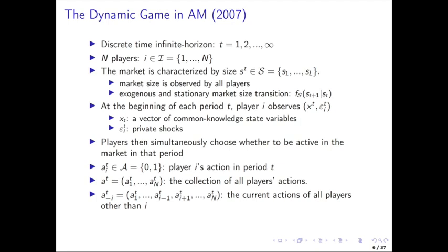Here's the notation for the dynamic game in Aguirregabiria and Mira in 2007. We have discrete time, infinite horizon — T goes from one up to infinity. We've got N players indexed by i, and so here's a set of players: the index one up to capital N. We can have varying the number of potential players. N here is the number of potential entrants, not the number of firms that are active in the market — it's the number of potential active firms.